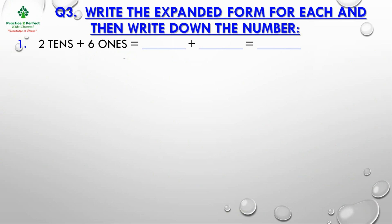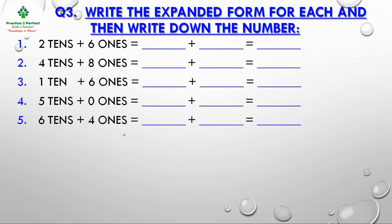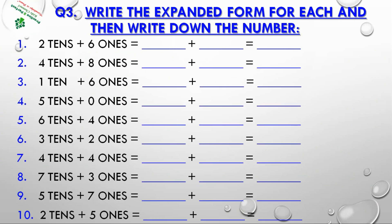Now moving to question number 3: Write the expanded form for each and then write down the number. Let us see the first example — 2 tens plus 6 ones. 2 tens is 1 ten plus 1 ten, that is 10 plus 10 which is equal to 20. And 6 ones is 6. So 20 plus 6 is equal to 26. In the same way, complete the rest of the questions.